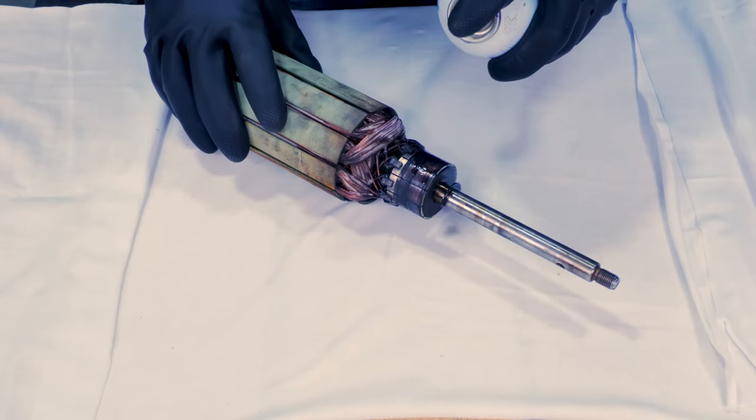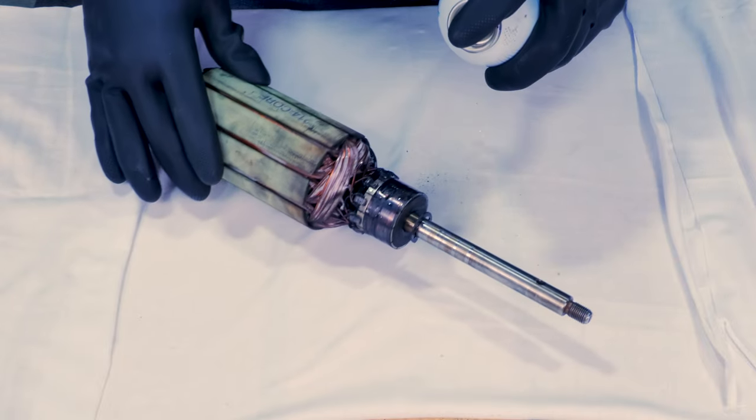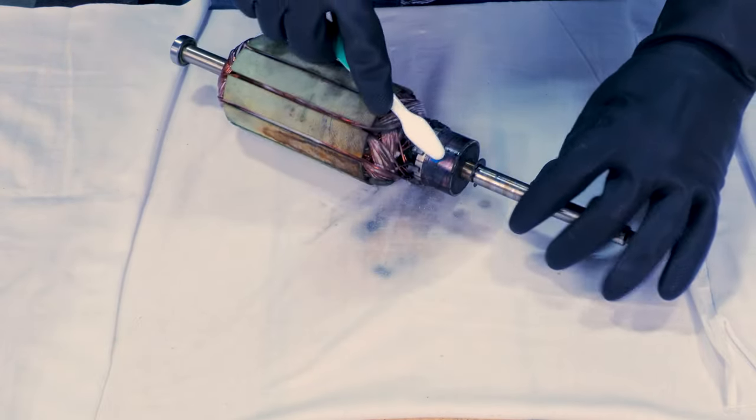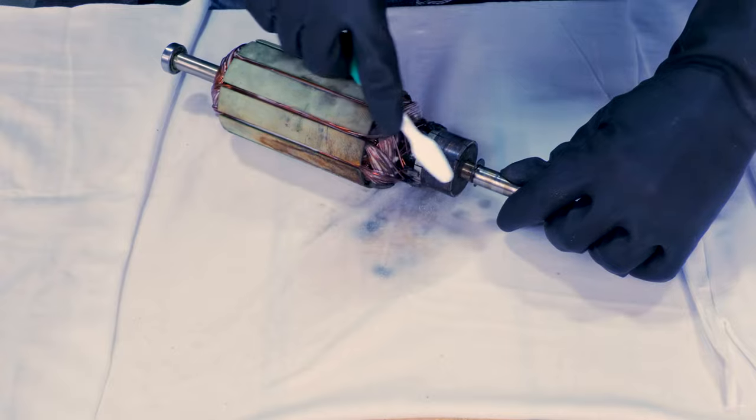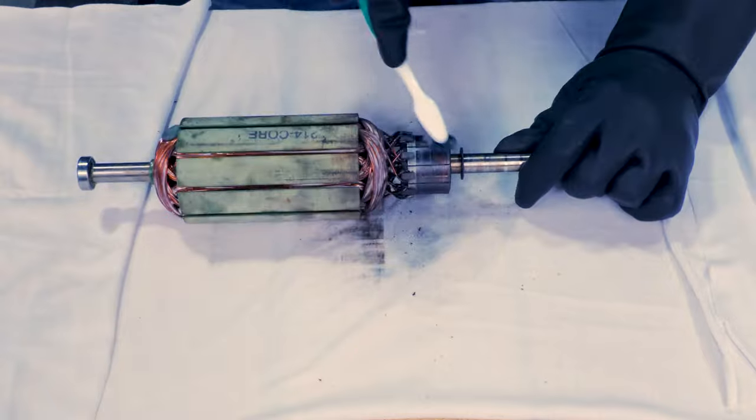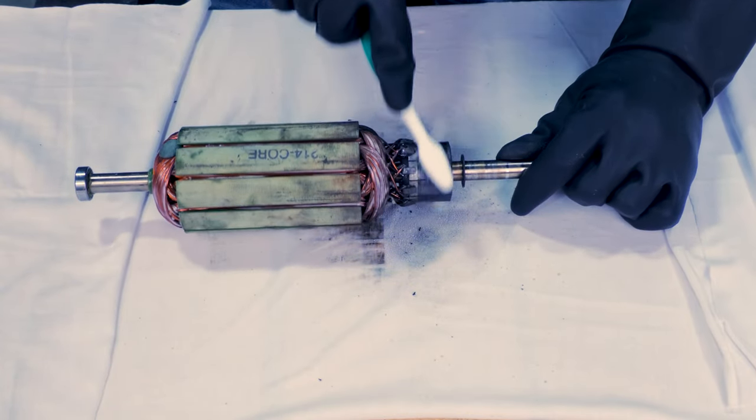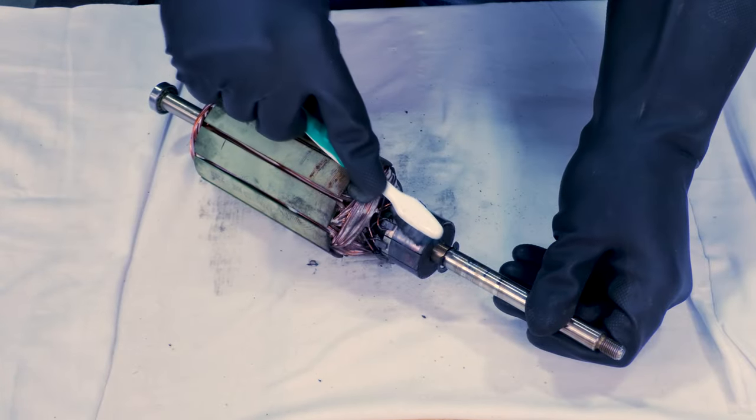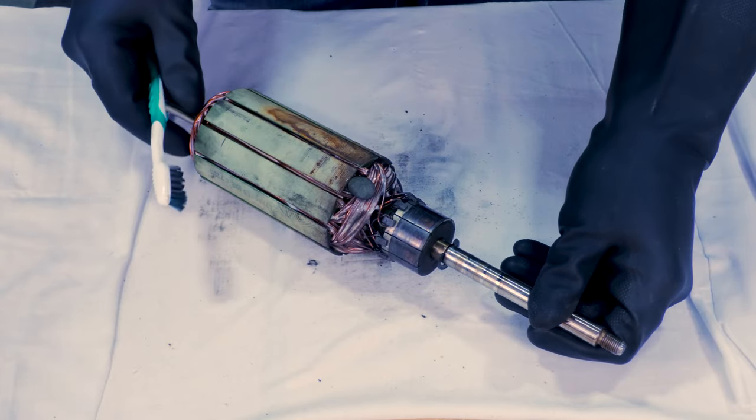To clean an armature, I like to start by cleaning the commutator using a toothbrush and electrical contact cleaner. This will remove any oils, dust, dirt, or any other contaminants that will cause connection issues. Once the armature is cleaned up, next we can resurface the commutator.